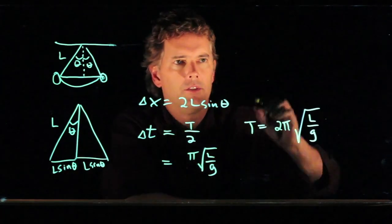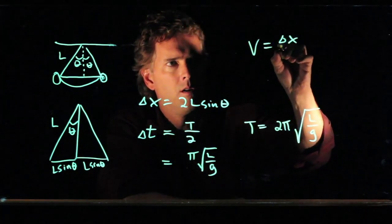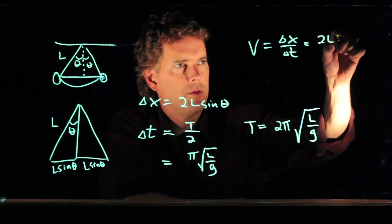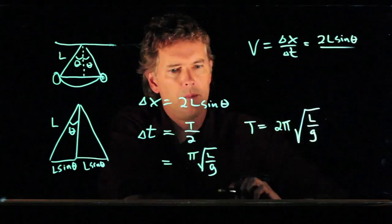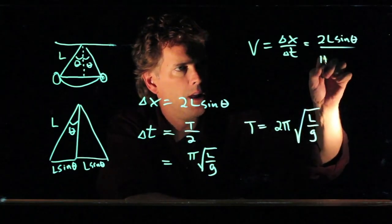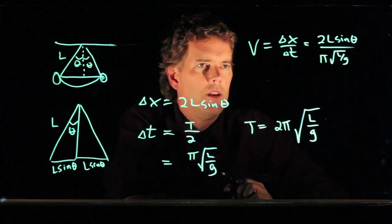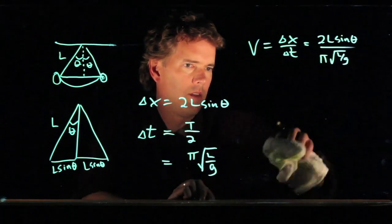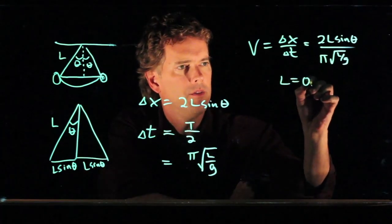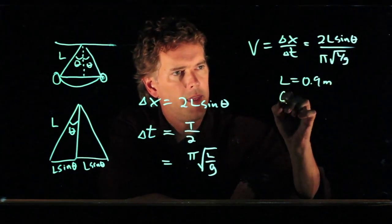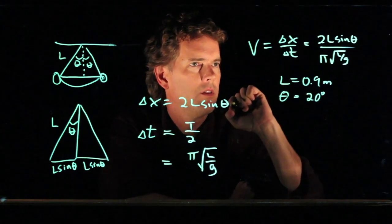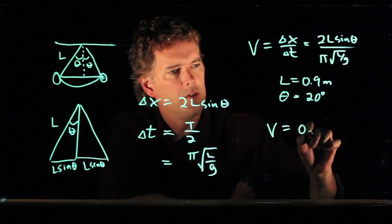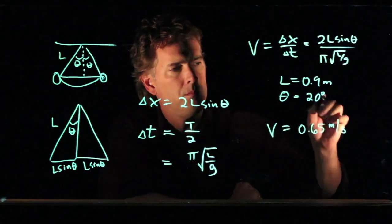And now we can calculate the speed, because the speed is just how far you go over how long it takes. And we know all those numbers: 2L sine theta divided by delta T, which we just said was pi times the square root of L over G. And now we can plug in some numbers. Let's take an arm length of 0.9 meters and an angle of 20 degrees. If you plug all those numbers in, you should get V equals 0.65 meters per second.